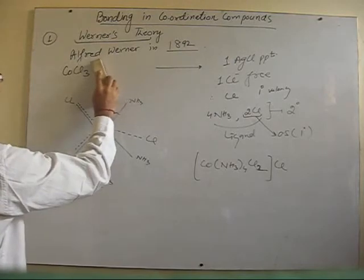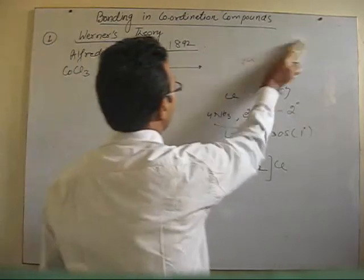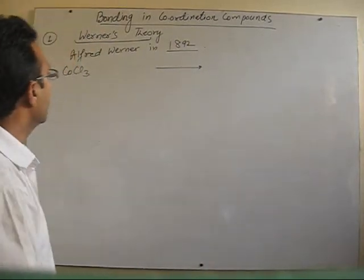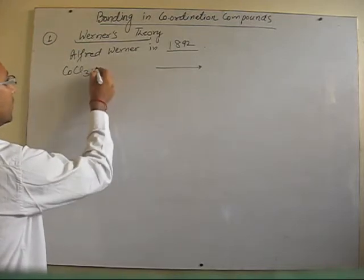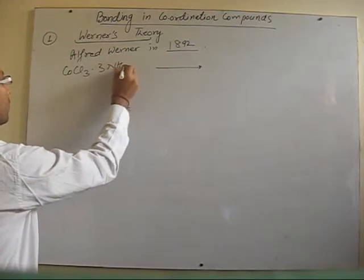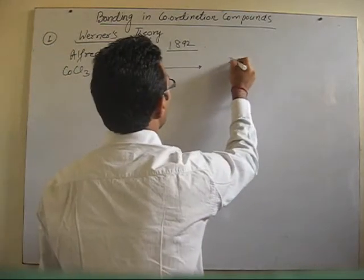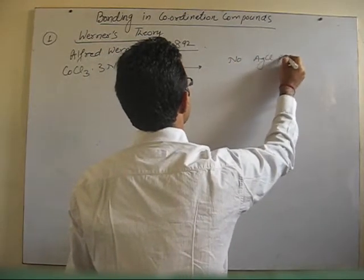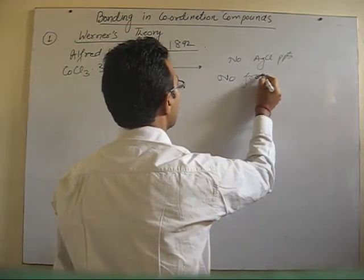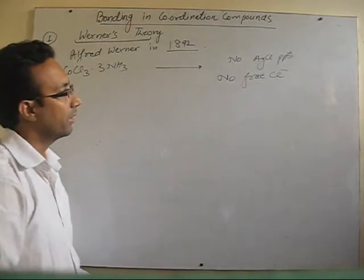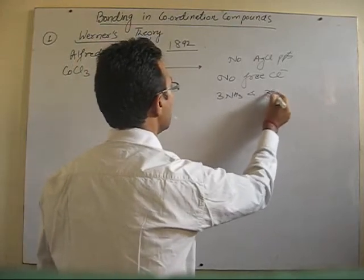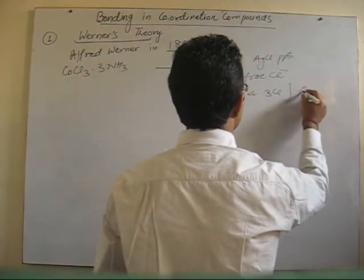Last example. The reaction with silver nitrate has helped us understand how primary and secondary valencies are satisfied by different species. Here, we have no AgCl precipitates — no silver nitrate test is positive. That means there is no free Cl⁻ ion in this case. Therefore, 3 ammonia and 3 Cl are all satisfying secondary valency.